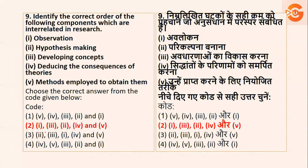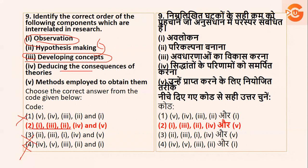Identify the correct order of following components in research. Research ka order kaise hai? Ham pahle observe karte hai, observation ke baad concepts develop karte hai, aur phir hypothesis banaate hai — so ideally it will be one, three, two. Uske baad ham consequences dekhenge aur phir methods employ karenge, so that is four and five. The right option is option number two.